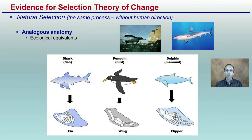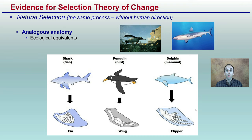Within our evidence for natural selection, the same process occurs without human direction. In this case, we could have ecological equivalence through analogous anatomy. We're looking at the fin of a shark, a penguin, and a dolphin — a fish, a bird, and a mammal — all developing these structures to aid them in being able to swim within the water environment.